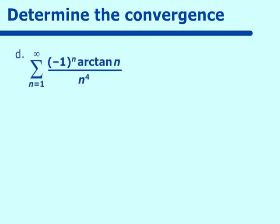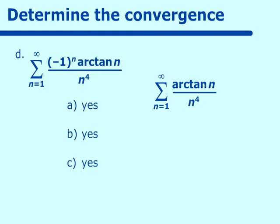Let's try (-1)ⁿ times arctan(n) over n to the fourth. (A) As n approaches infinity, arctan(n) approaches π/2, which is a positive number — yes. (B) The n⁴ in the denominator ensures the terms decrease — yes. (C) Limit approaches 0 — yes. Now for absolute convergence: arctan(n) approaches a finite number as n→∞, so arctan(n)/n⁴ behaves like a small number over n⁴, which converges. Therefore the alternating series converges absolutely.